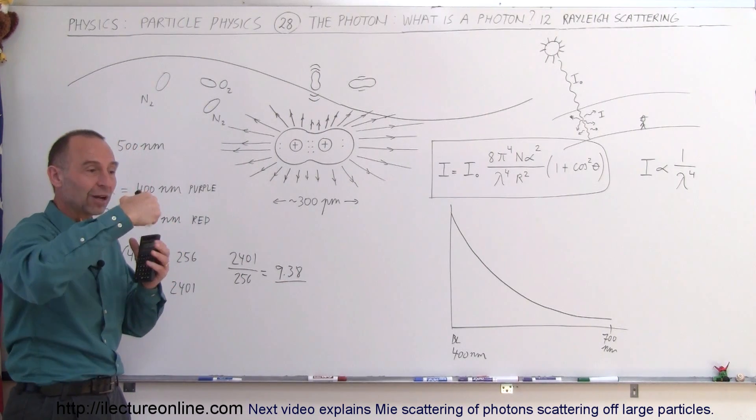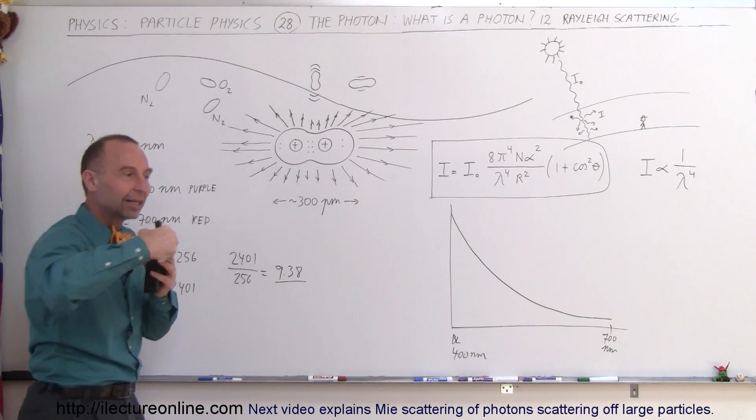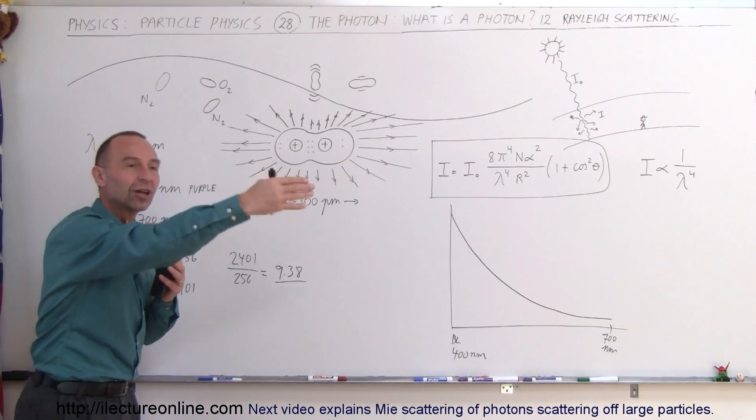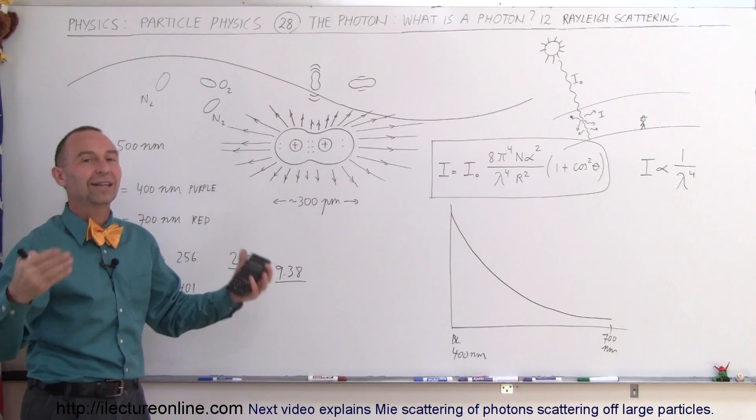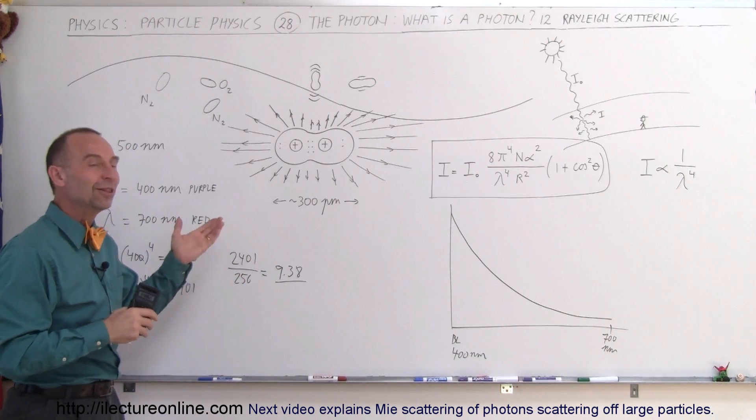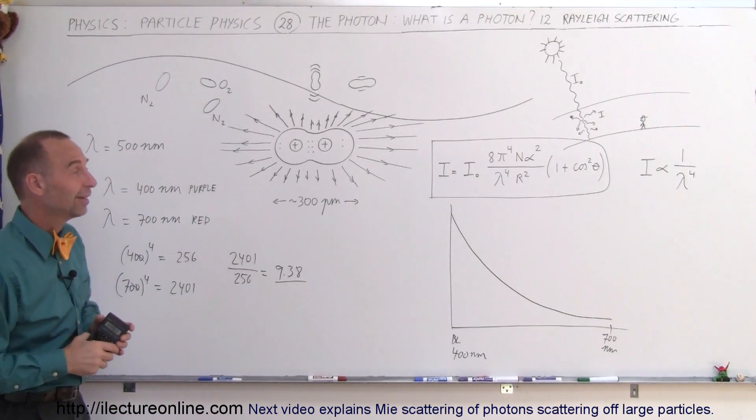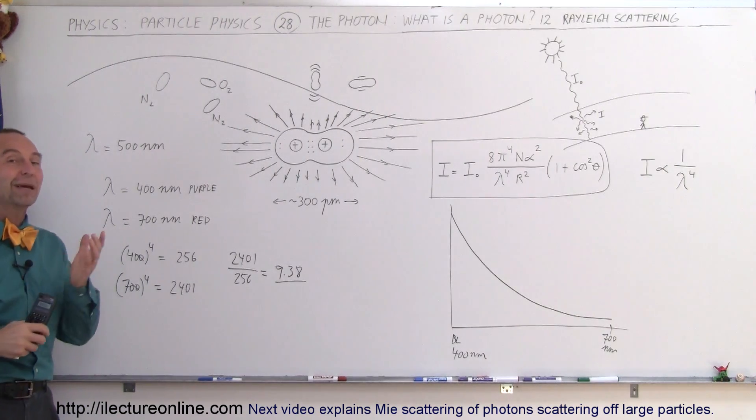And so we have a photon coming in one direction, getting absorbed by the molecule, getting pushed out in another direction, goes on its merry way, same wavelength, different direction. And that's how photons get scattered in the Earth's atmosphere. Pretty ingenious way of making the scattering work.